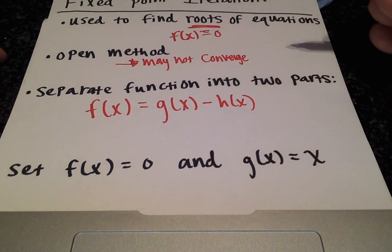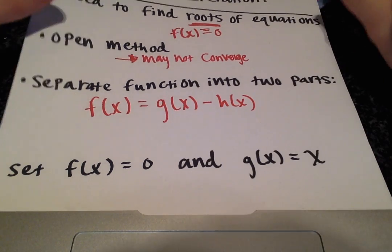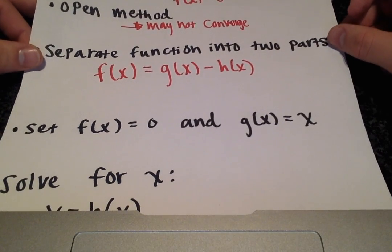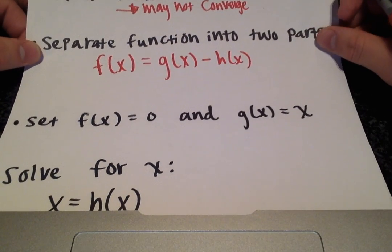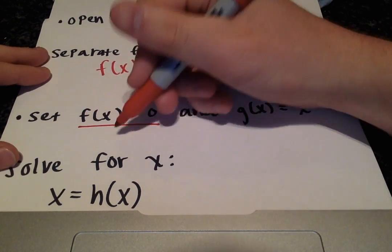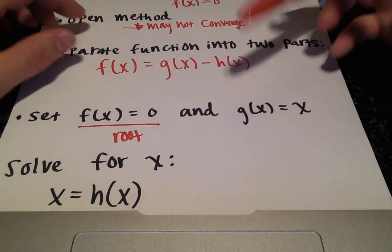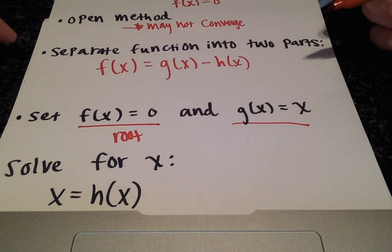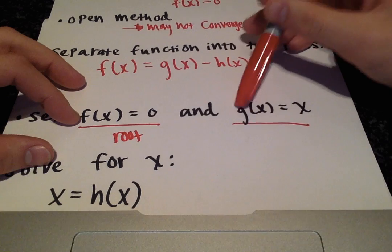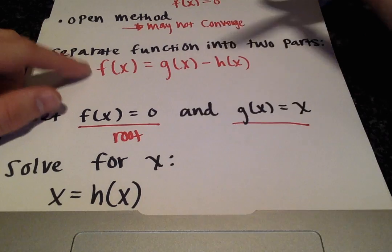We'll set f(x) equal to 0 and g(x) equal to x. We set f(x) equal to 0 because we want to find the root where the function equals 0, and we're setting g(x) equal to x for reasons you'll see in just a second. When we set f(x) equal to 0 and g(x) equal to x, we can plug those values into f(x) equals g(x) minus h(x).